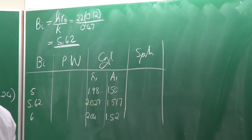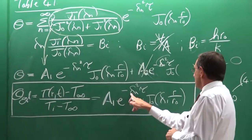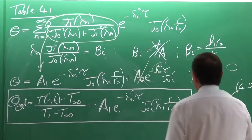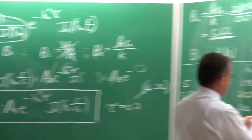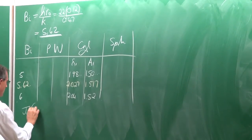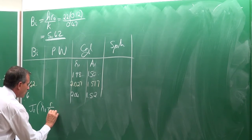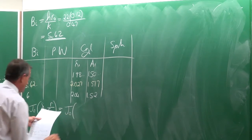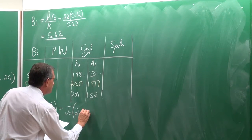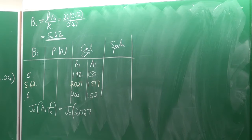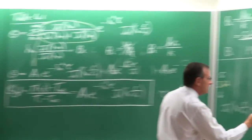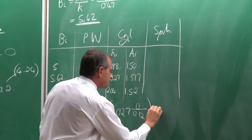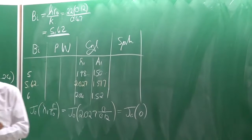With λ₁ = 2.027 and A₁ = 1.517, we still need J₀(λ₁·r/r₀). For the center temperature calculation, r = 0, so J₀(λ₁ × 0/r₀) = J₀(0). From table 4.3, J₀(0) = 1 exactly, and J₁(0) = 0.